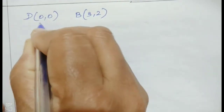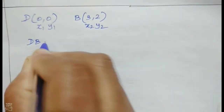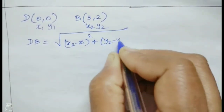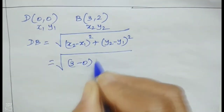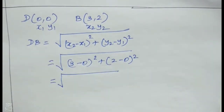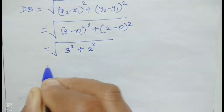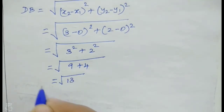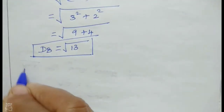Now for DB. Using the distance formula: DB equals root of (x2 minus x1) squared plus (y2 minus y1) squared. Substituting: root of (3 minus 0) squared plus (2 minus 0) squared, equal to root of 9 plus 4, equal to root of 13.